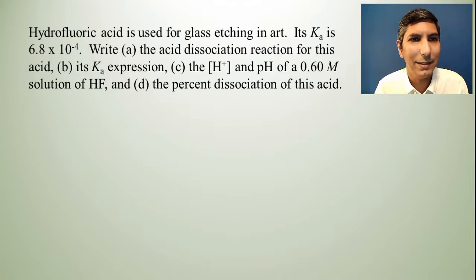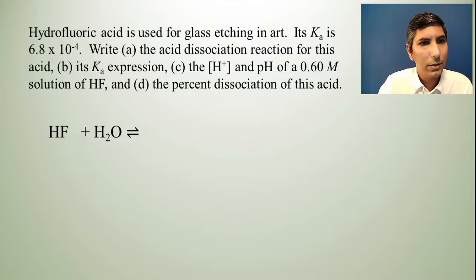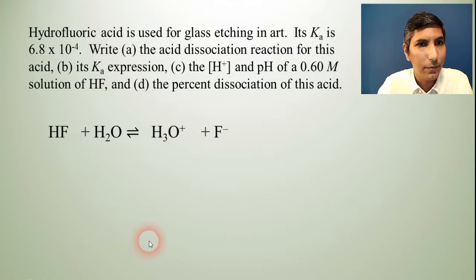This one says hydrofluoric acid is used for glass etching in art. Its Ka is 6.8 times 10 to the negative fourth. Write the acid dissociation reaction for this acid, its Ka expression, the H+ and pH of a 0.60 molar solution of HF, and the percent dissociation of this acid. So let's do part A, this reaction. Hydrofluoric acid of course is HF and we always write these being added to water. So the products are going to be hydronium and the conjugate base of the acid, which is fluoride.